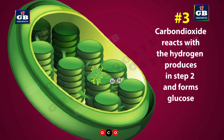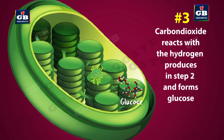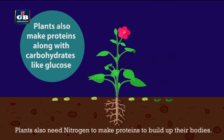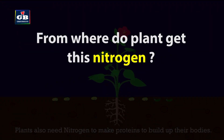Step 3: The hydrogen produced in Step 2 reacts with carbon dioxide and forms glucose. Apart from glucose, plants also make proteins in their bodies. Plants need nitrogen to make protein molecules, and they get this nitrogen from the soil.